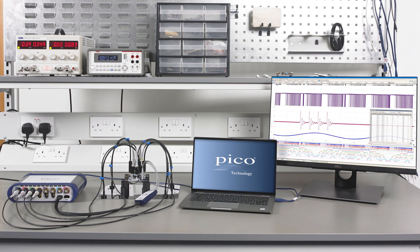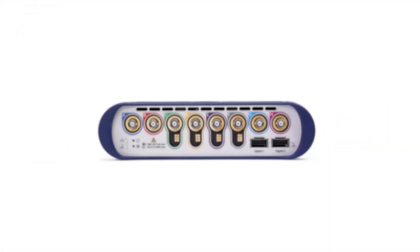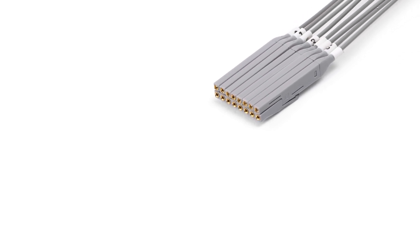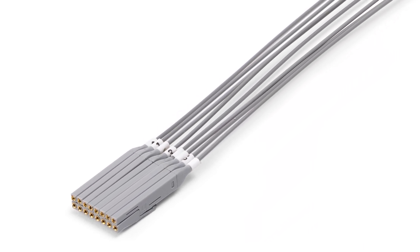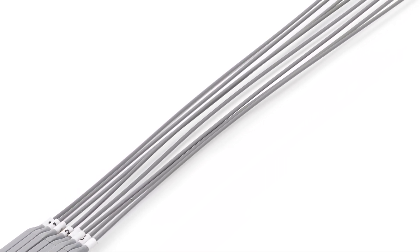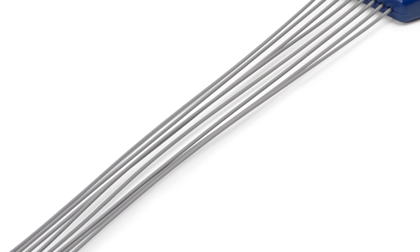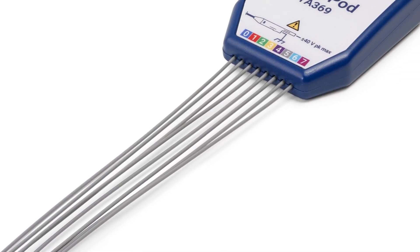In this video we'll look at making measurements with digital channels on the new Picoscope 6000E series mixed signal oscilloscopes. Digital channels are enabled with the optional TA369 MSO pod. The pod has eight digital inputs and you can connect two of them to the Picoscope for a total of 16 channels.